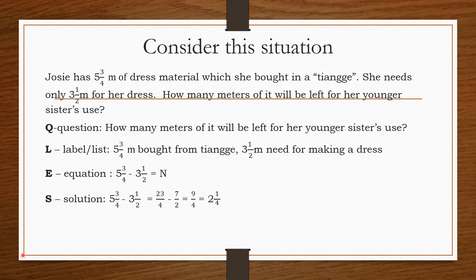But here, we need to get the LCD — or the least common denominator. We use the least common factor by getting the multiples. We know that four and two times two is four, so the LCD is four. Four divided by four is one, times twenty-three equals twenty-three. Four divided by two is two, times seven is fourteen. So twenty-three minus fourteen is nine, over four — or two and one-fourth.